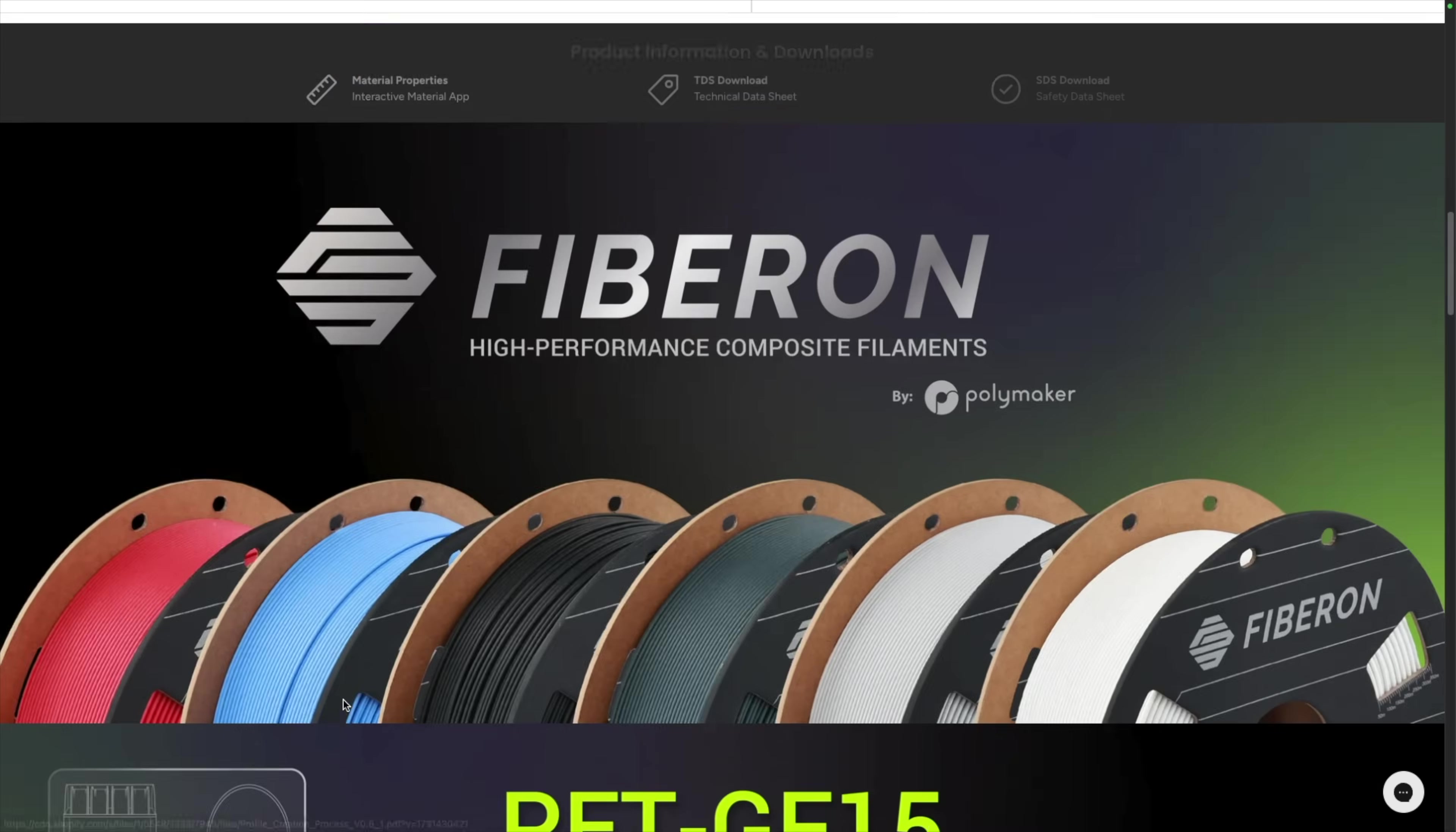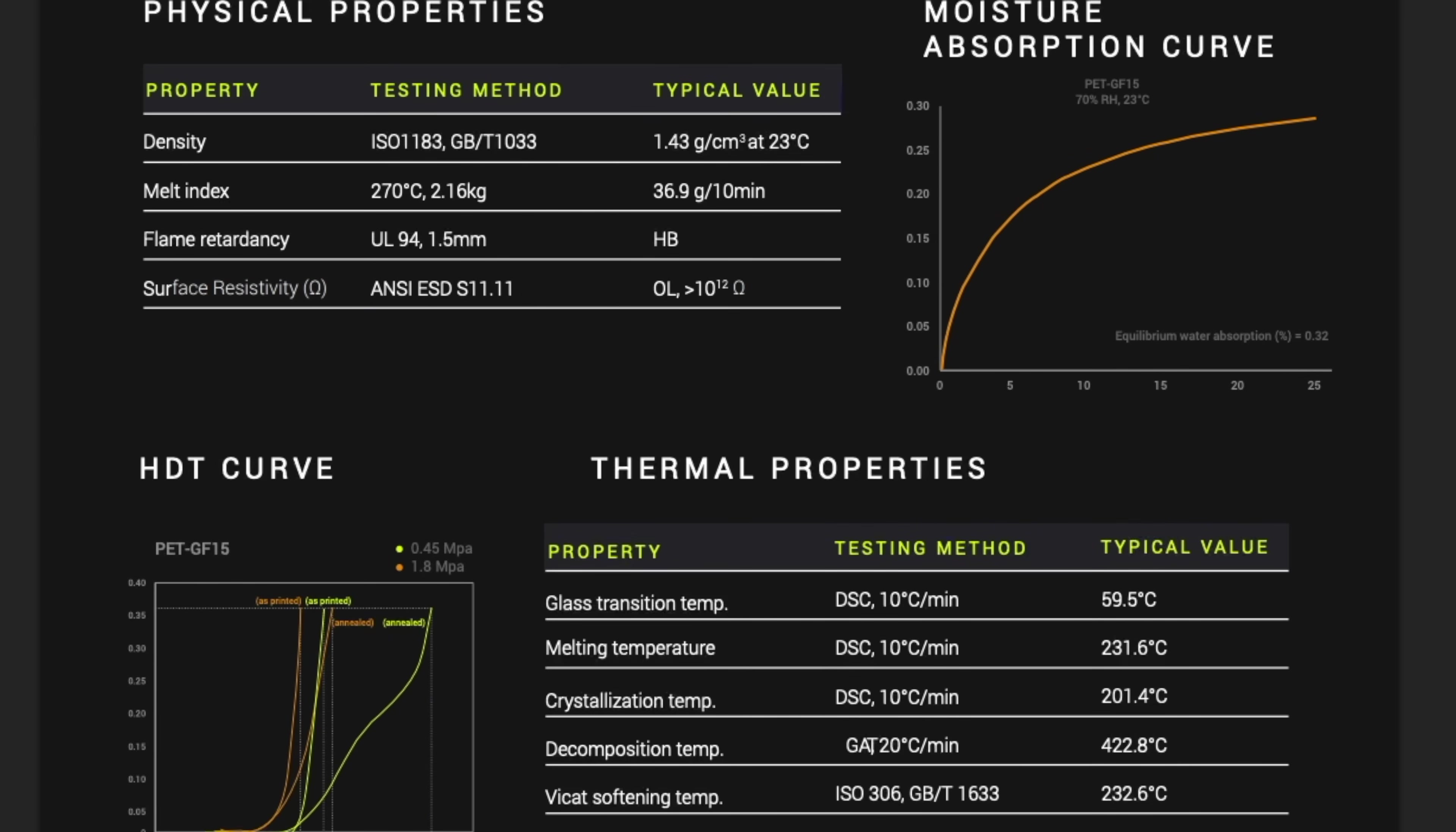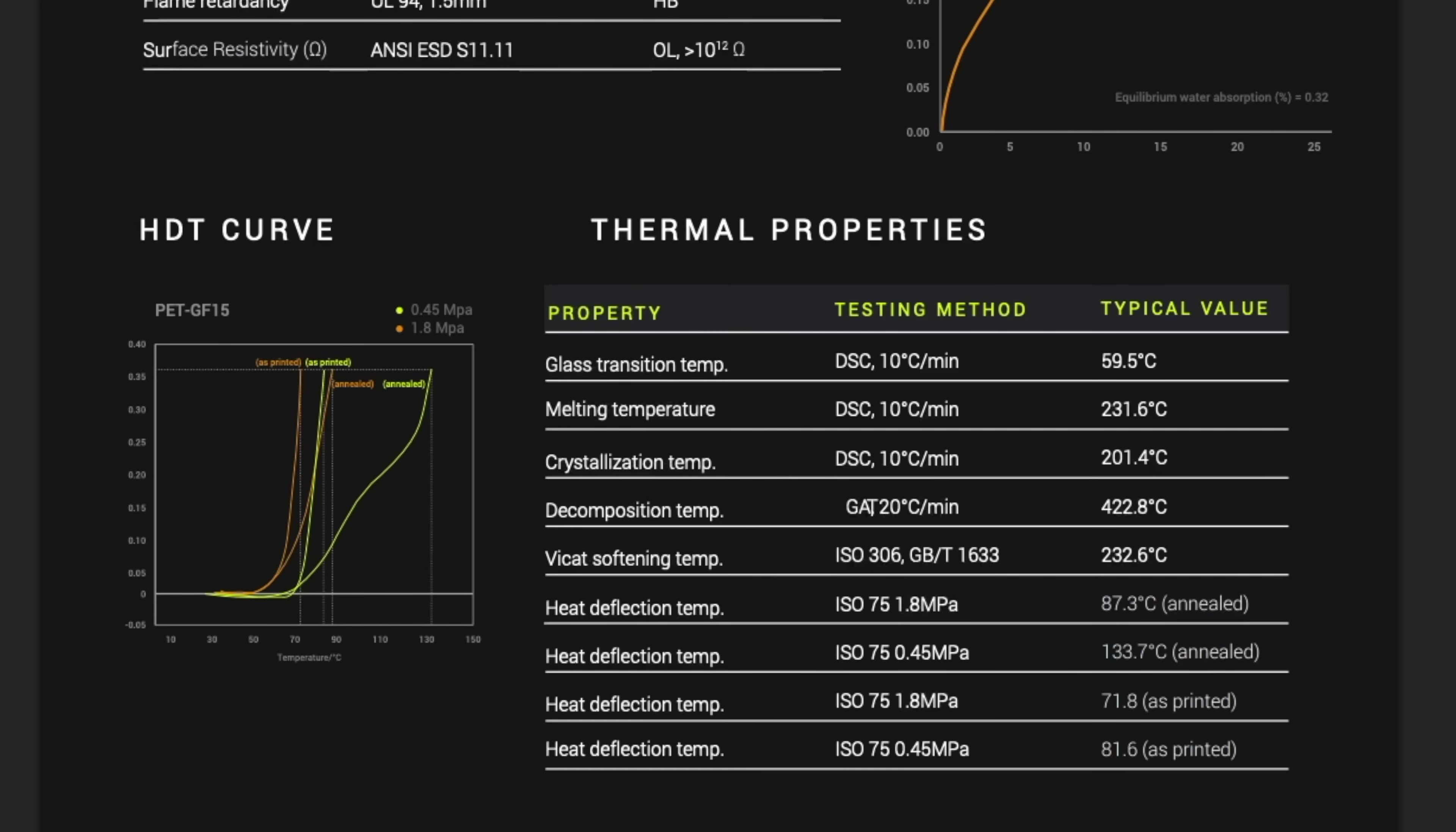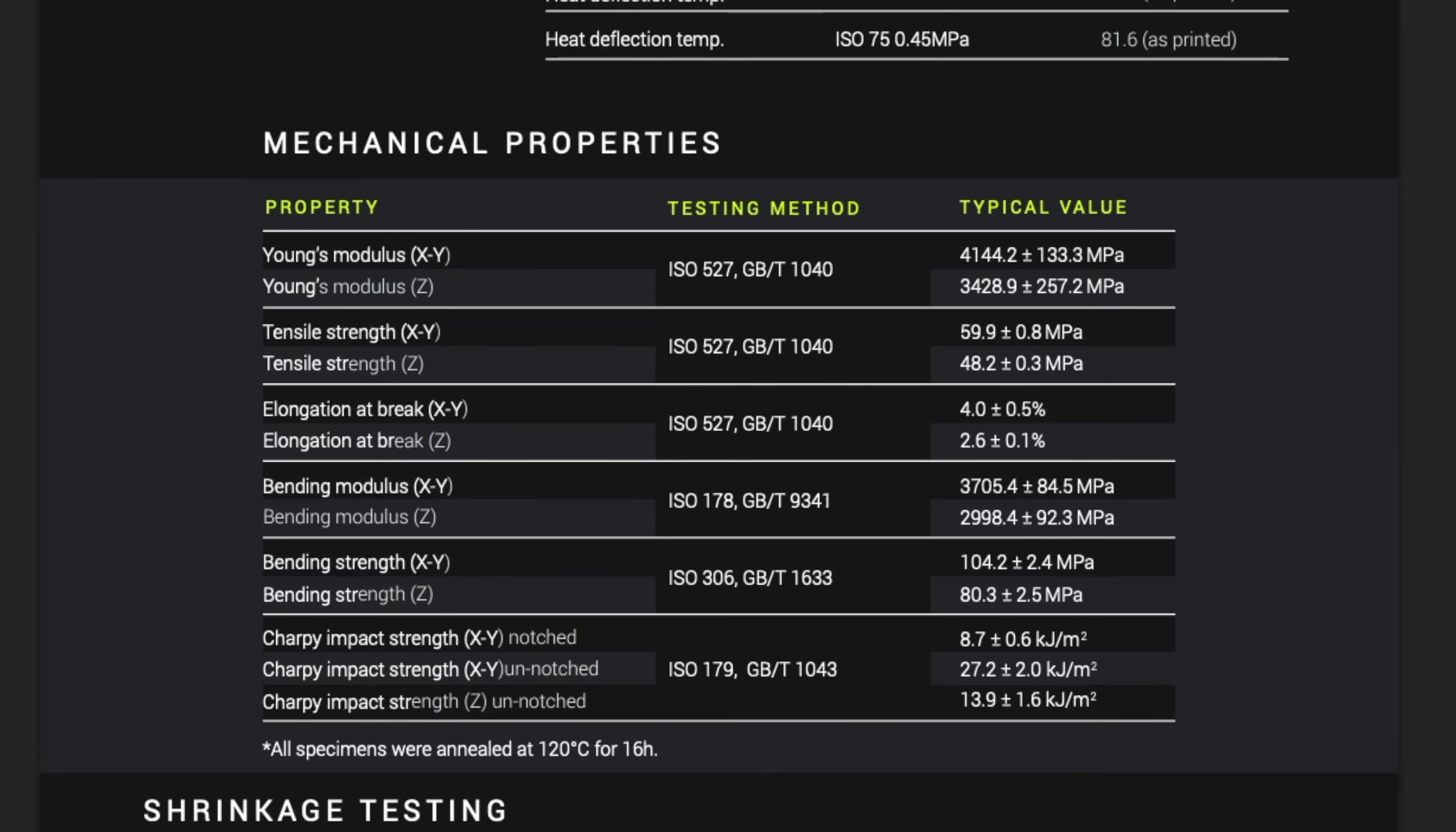One thing I like about Polymaker filaments is that on all product pages, they have a TDS containing a wide range of both thermal and mechanical tests for their material. There's nothing wrong with printing an engineering filament just because you like the look and feel of the finished print, but for anyone that is going to be using it for a demanding application, having easy access to this information is invaluable.